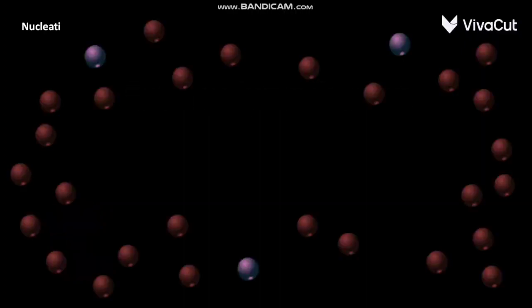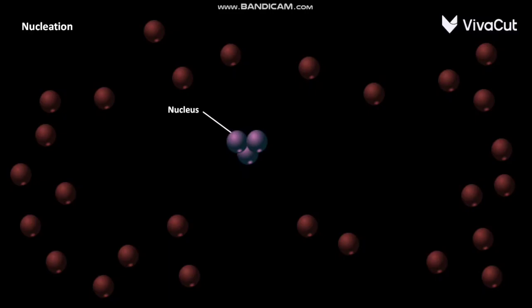In the nucleation phase of actin polymerization, the G-actin subunits combine to form a stable seed or nucleus. This stable nucleus consists of three G-actin subunits. The nucleus has a minus-end and a plus-end.